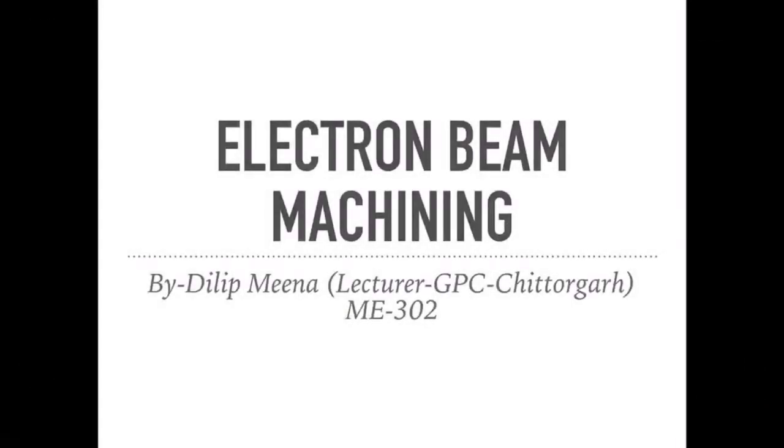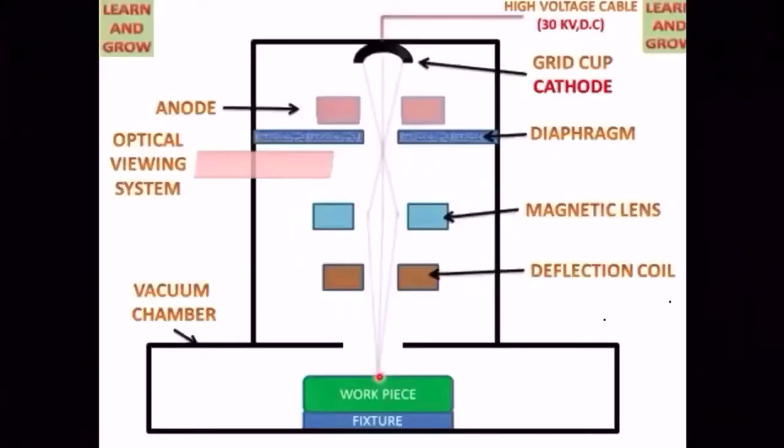I am delivering a lecture on electron beam machining. Let's begin. Here you can see a typical diagram of electron beam machining process. You can see the high voltage cable which is 30,000 volts, and 30 KV DC supply will be used.